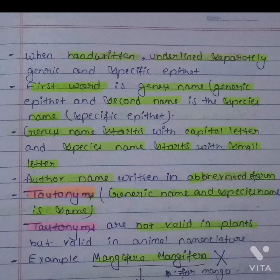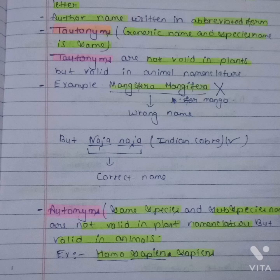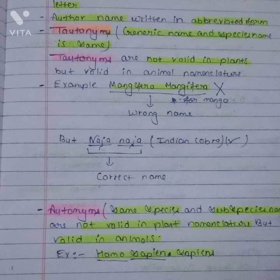For example, Mangifera mangifera is the wrong name for mango because tautonyms are not valid in plants. But Naja naja, which is the name for the Indian cobra, is absolutely correct because tautonyms are allowed in animal nomenclature. The next is autonyms — where the same species and subspecies name are not valid in plant nomenclature but are valid in animals. For example, Homo sapiens sapiens, where the subspecies and species name are the same, is an absolutely correct name in animals.